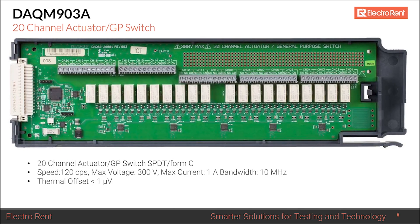The DAQM903A is a 20-channel actuator and general-purpose switch card used to drive external loads — such as lighting up a light or closing a relay. It can handle up to 300 volts and 1 amp. It's a Form C actuator, meaning both sides of the switch are accessible, so you can do power routing if needed.